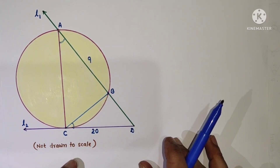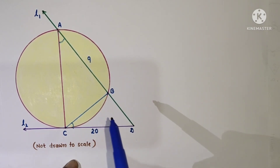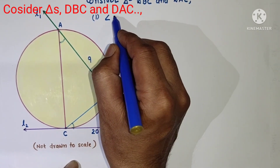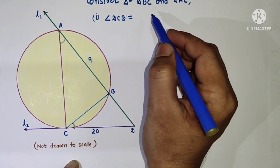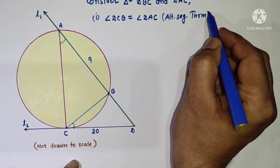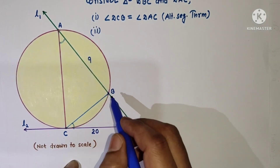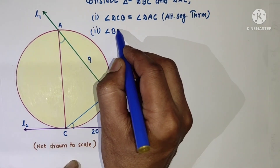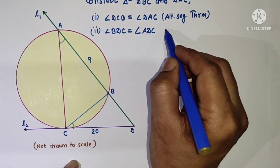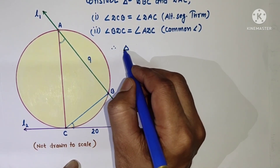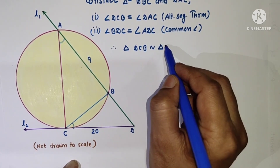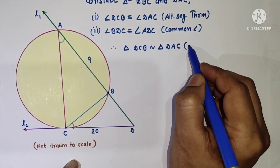Consider two triangles DBC and DAC. First, angle DCB is equal to angle DAC by the alternate segment theorem. Second, angle BDC is equal to angle ADC as a common angle. Therefore, triangle DCB is similar to triangle DAC by the AA test of similarity.